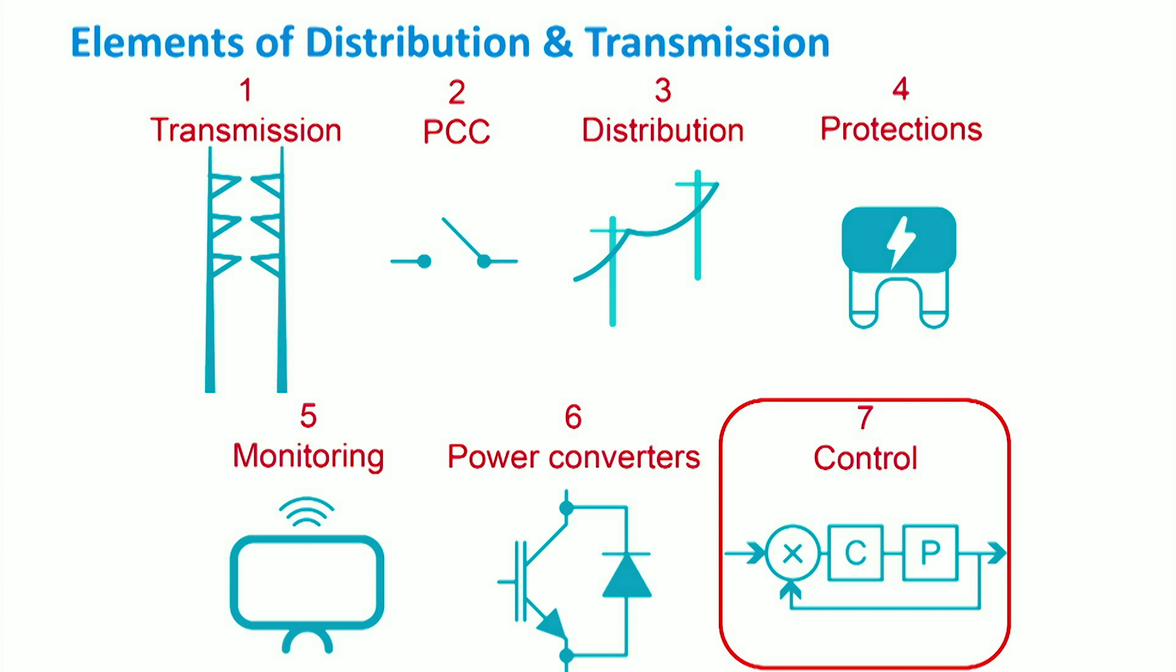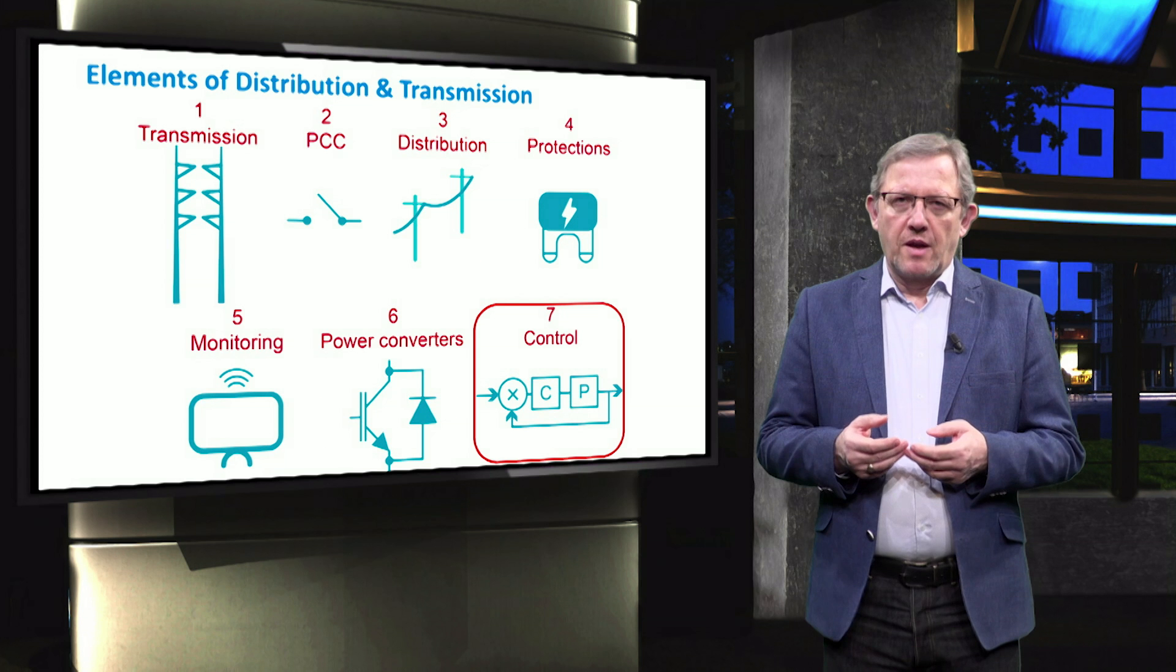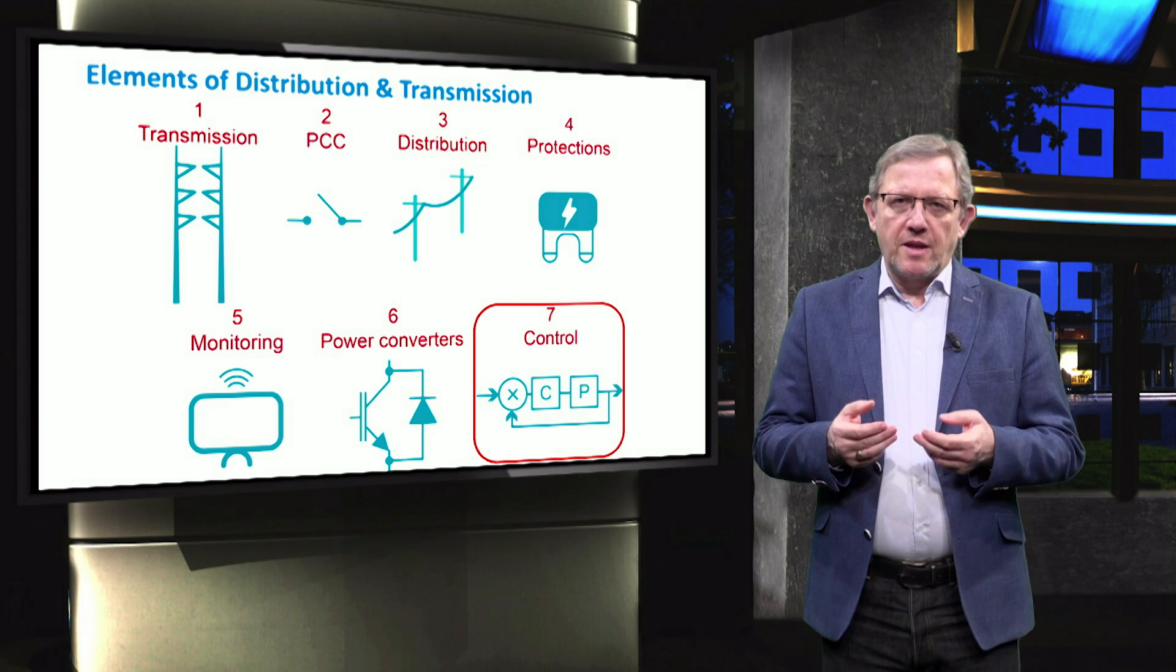Finally, control in microgrids shall be properly implemented at different control levels, namely upstream main grid level, microgrid level, and microsource local level.